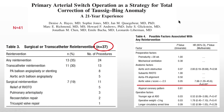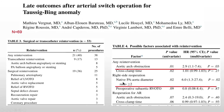After arterial switch operation for Taussig-Bing anomalies, aortic arch obstruction can still occur, and the ascending aorta diameter being large is a problem. Thinking about this initial operation and what to do — after seven operations the patient is now back to normal life. Thank you very much for your attention.